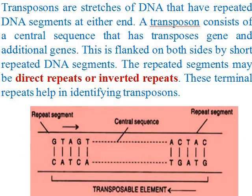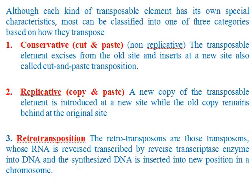We have a lot of jumping genes or transposons, so we have a lot of types. But depending upon how they transpose — means how they move from their original position to another position — we have three types: conservative, replicative, and retro transposons.